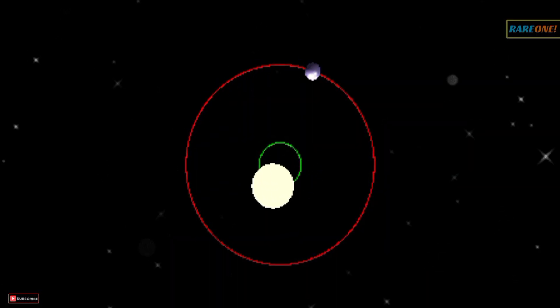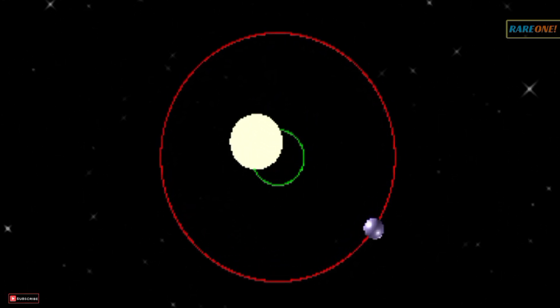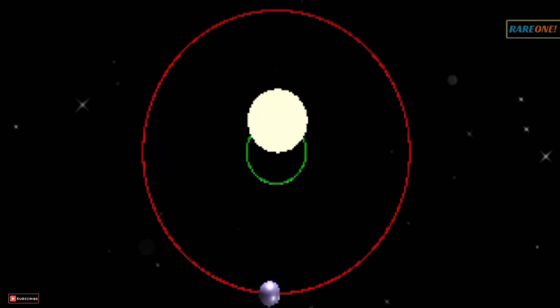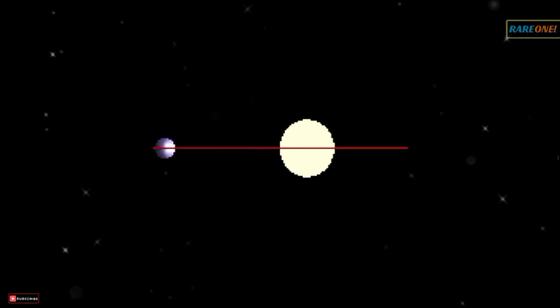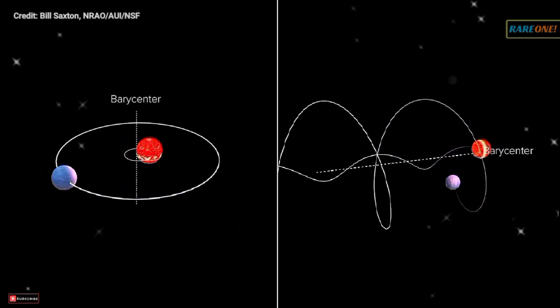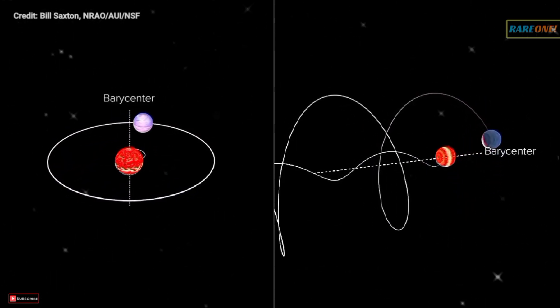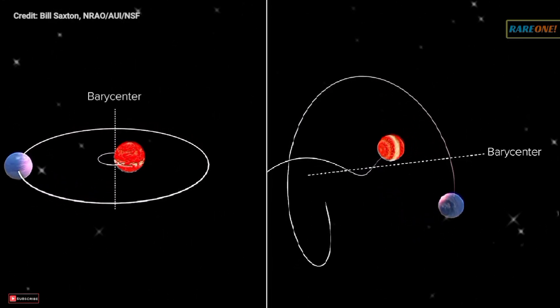But in space, things get a bit more complex. When you have two objects orbiting each other, like planets around a star, there's a point around which they both revolve. This point is the barycenter. And guess what? It's not always at the center of the bigger object. It depends on their masses.